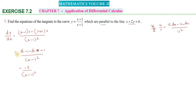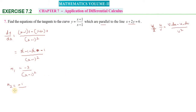So here m1 equals dy/dx. For m2, we take the given line x plus 2y equals 6. The slope m2 equals minus coefficient of x divided by coefficient of y, which gives minus 1 by 2.